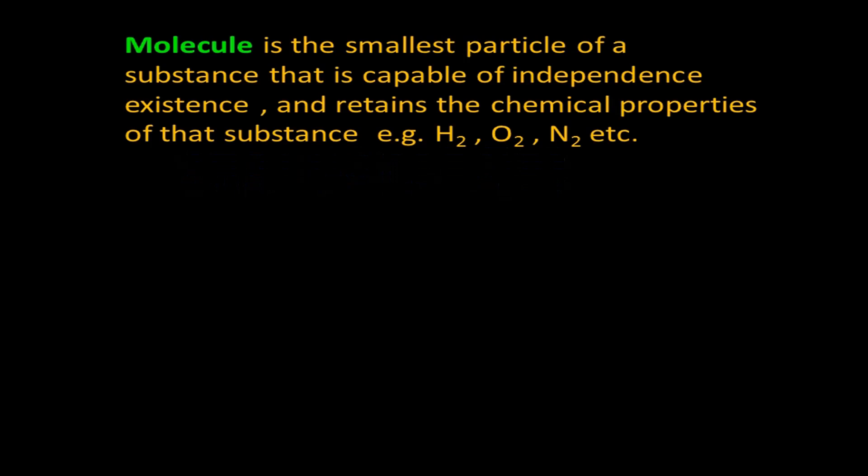In this video we'll be looking at atomic species. Let's start by defining some terms. A molecule is the smallest particle of a substance that is capable of independent existence and retains the chemical properties of that substance. Examples include hydrogen gas, oxygen gas, and nitrogen gas.